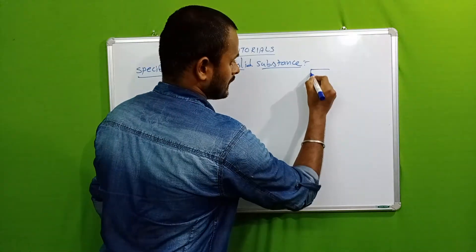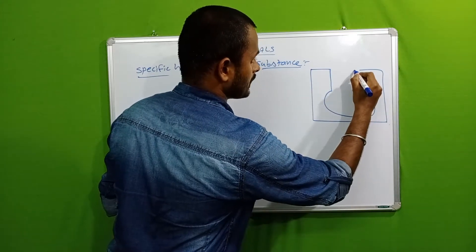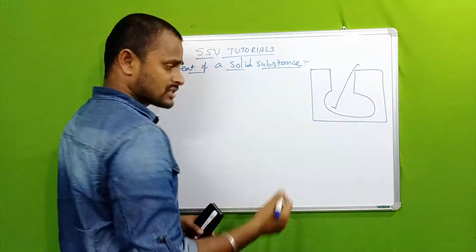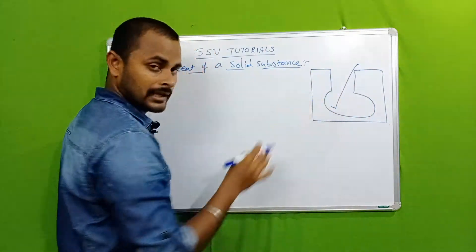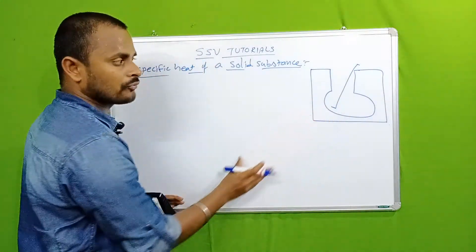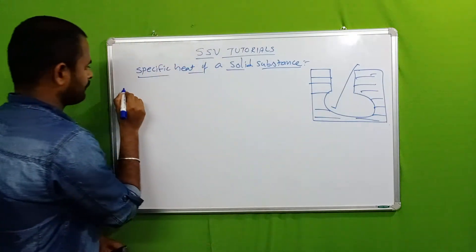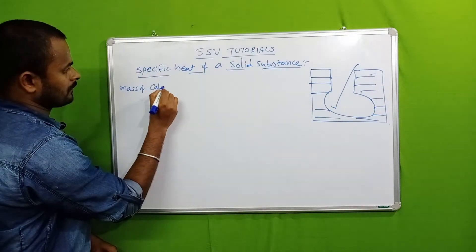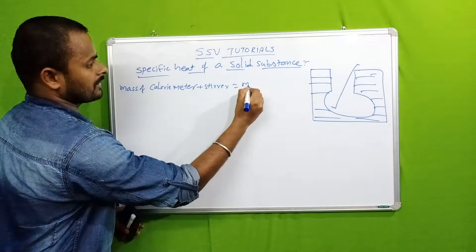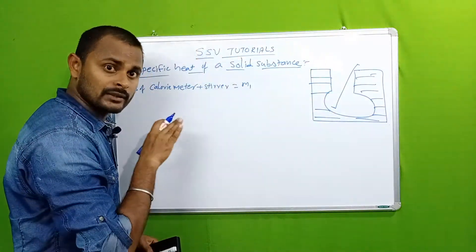The first apparatus needed is a calorimeter. Heat experiments are always done in this apparatus, called a calorimeter, along with a stirrer. First, take an empty calorimeter and find its mass. The mass of the calorimeter plus stirrer is taken as M1.